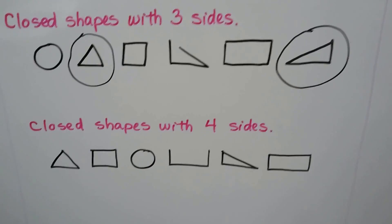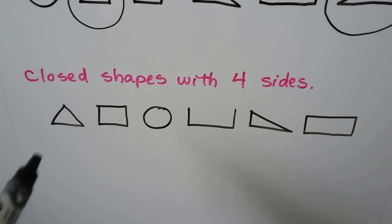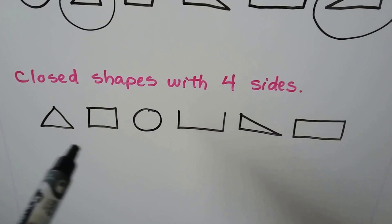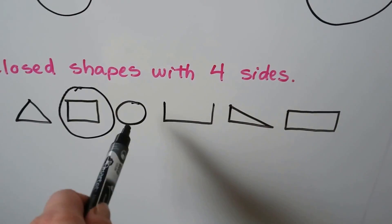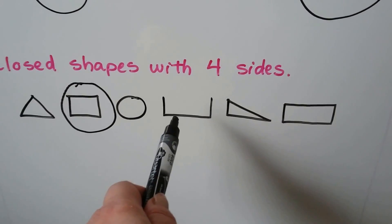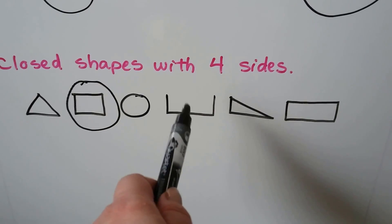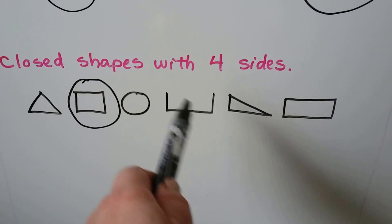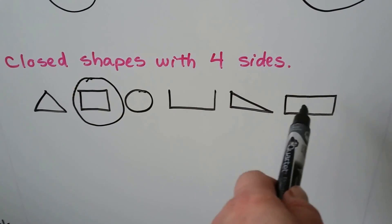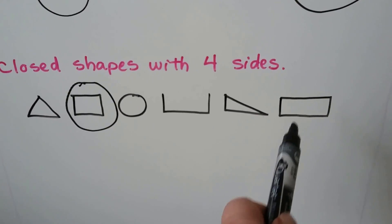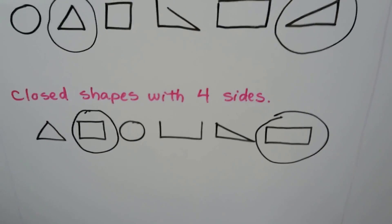This sorting rule says: closed shapes with four sides. Triangles have three, so it's not the triangle. Squares have four sides, so we can circle this one. Circles don't have any sides. This was supposed to be a triangle, but it's open — it didn't get finished. Triangles have three sides, and the rectangle has four sides: one, two, three, four. We followed the sorting rule.